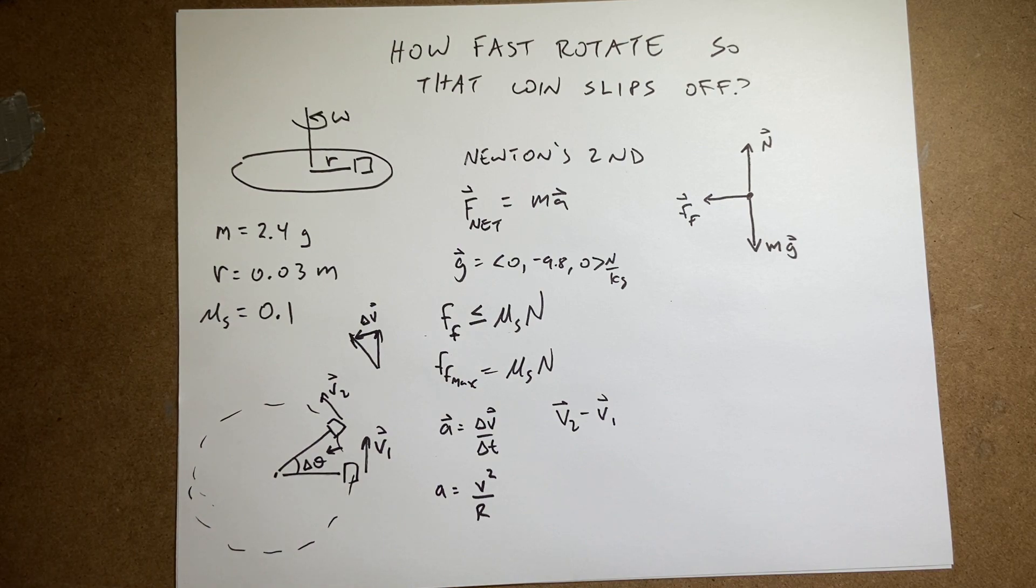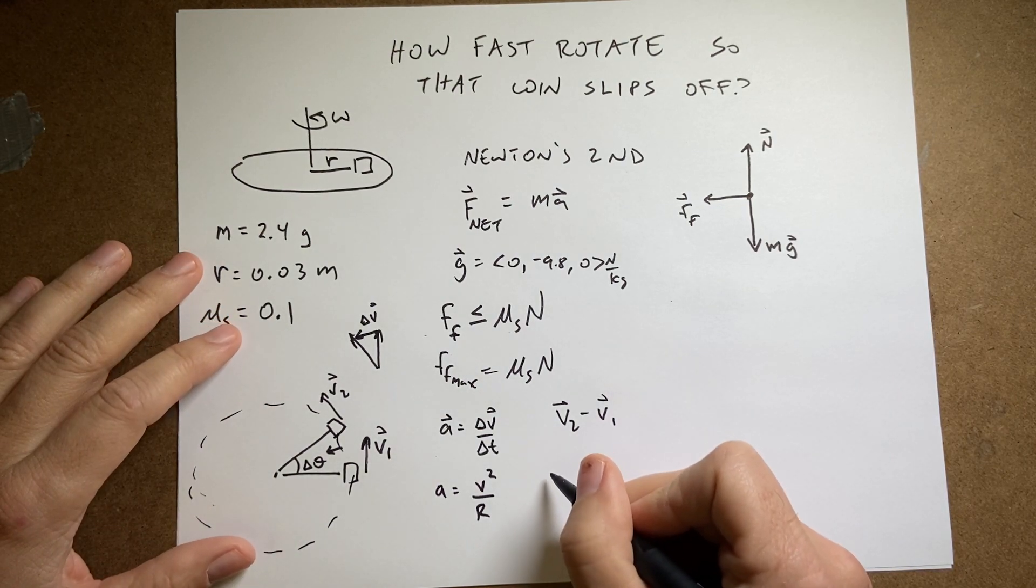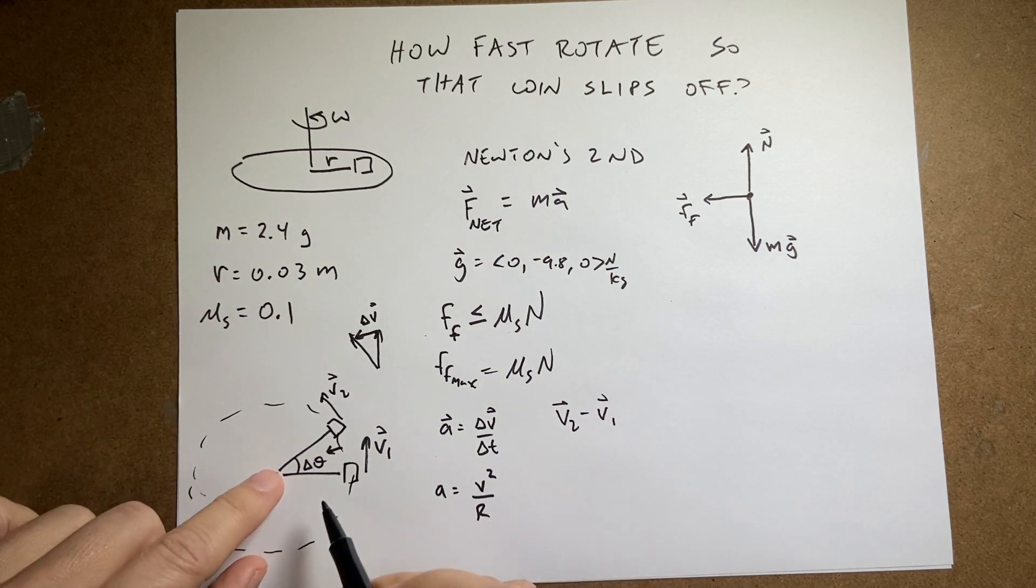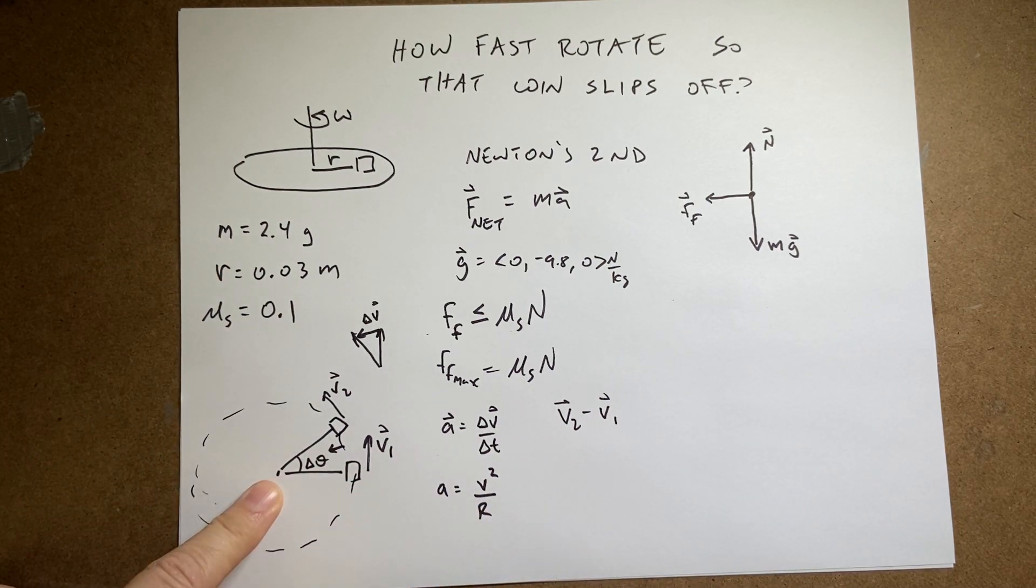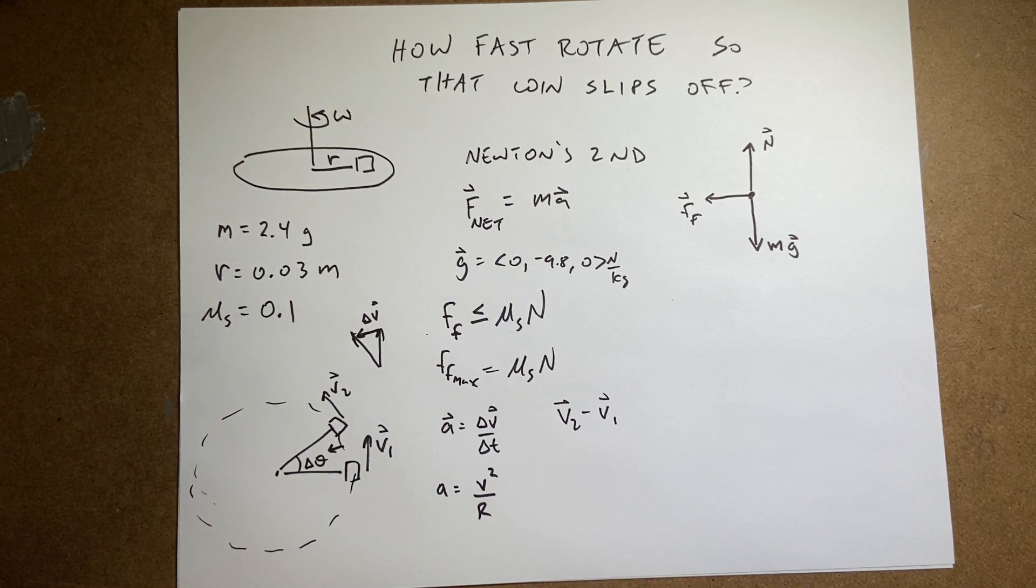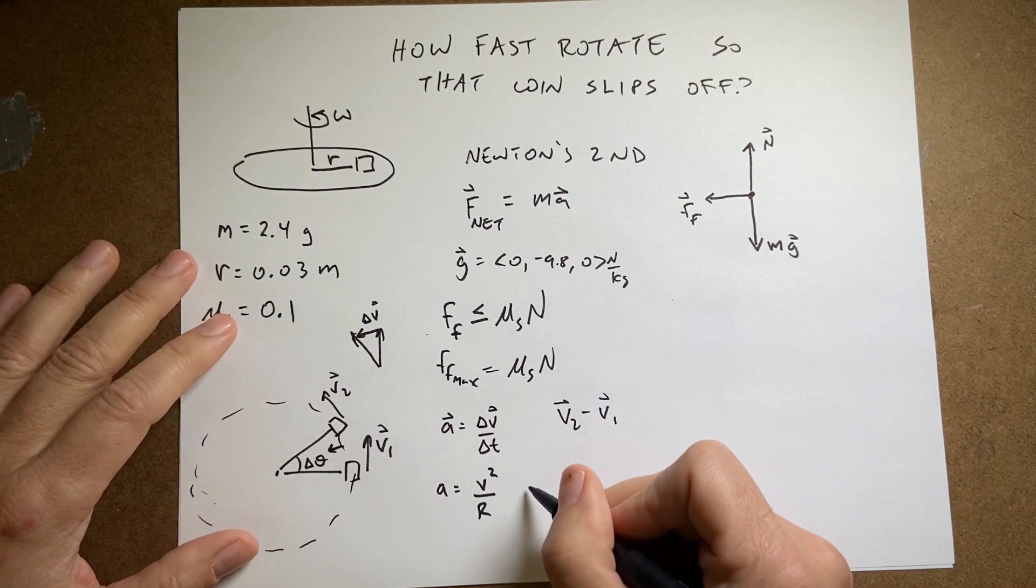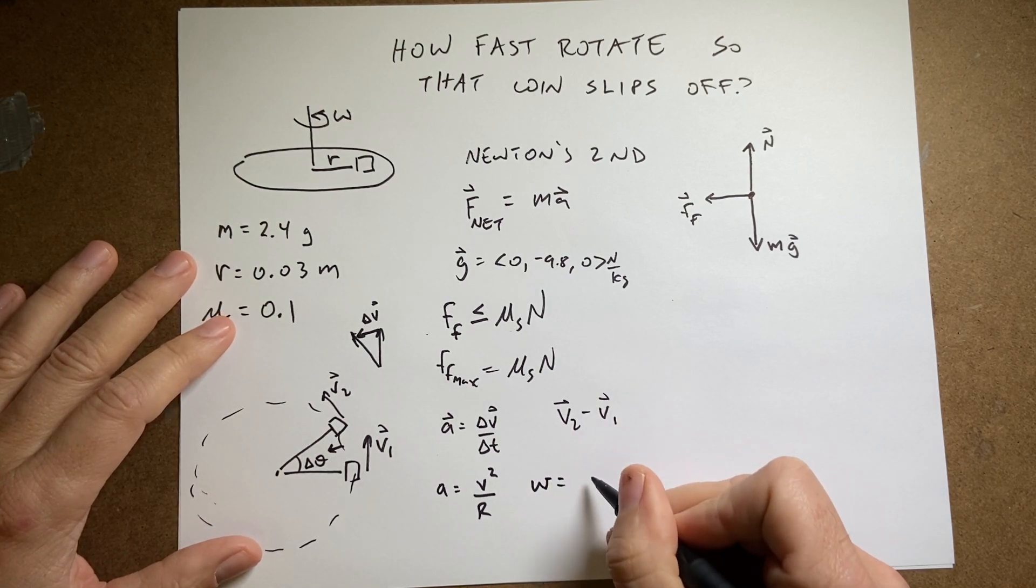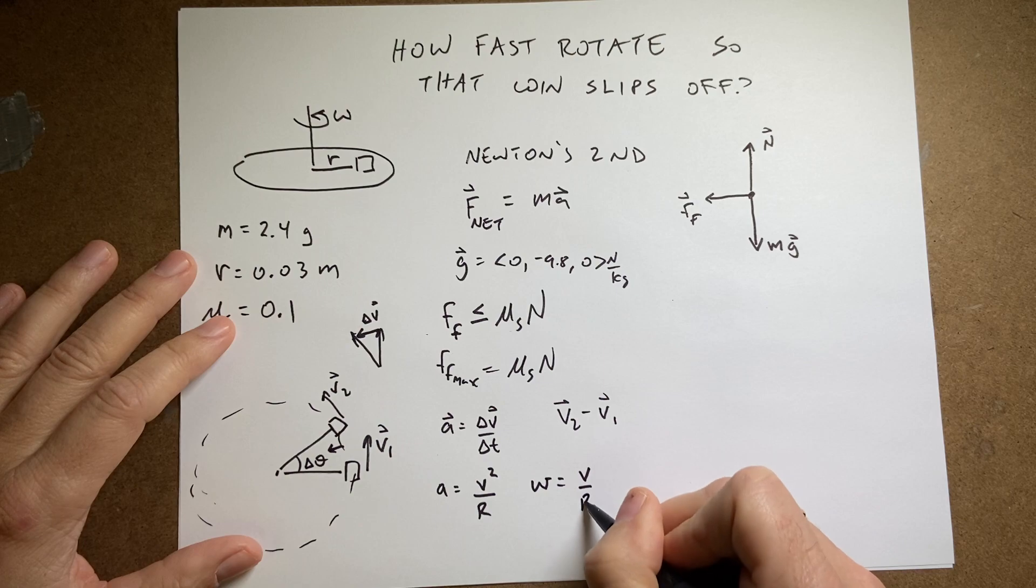Now, we also know, and I'll leave this derivation for later too, that if an object moving in a circle at a constant speed, I could describe that with a velocity or I could describe that with an angular velocity. And the angular velocity is going to be equal to V over R.